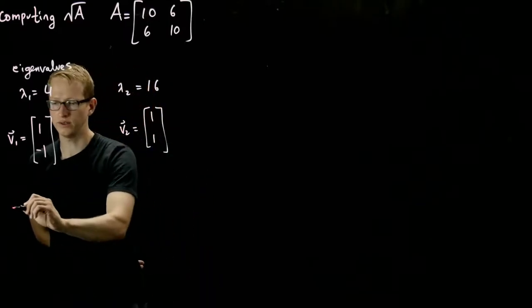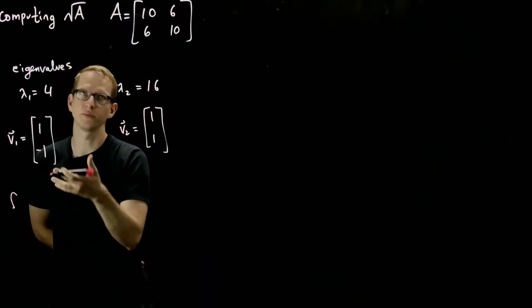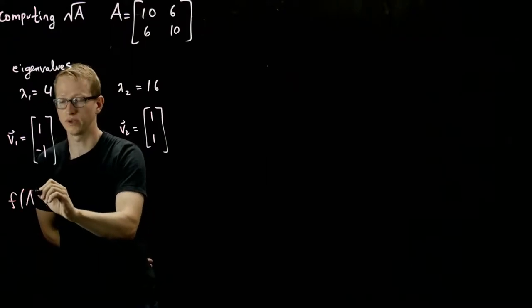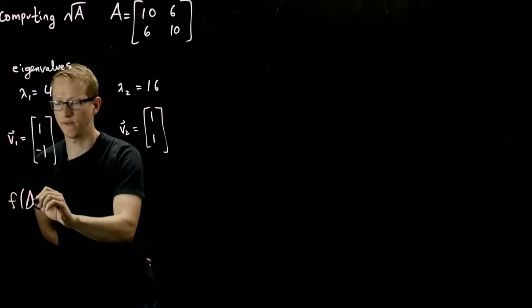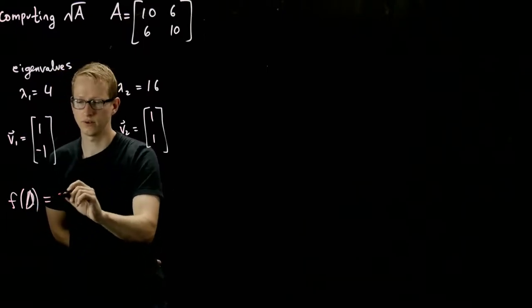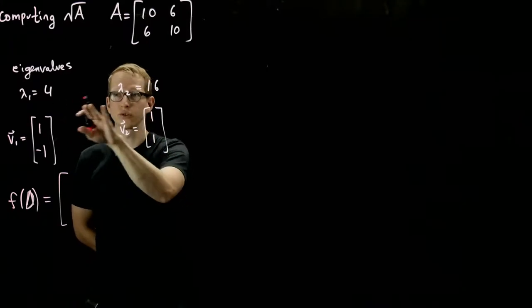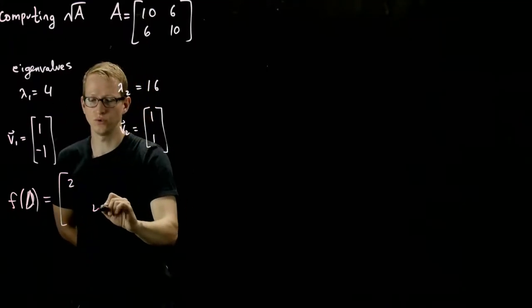And so now let's compute what f, and f meaning the square root of A, so what is f of the diagonal matrix D associated to these eigenvalues? This is taking the square root of each of the corresponding entries on the diagonal. So it's just 2 and 4.